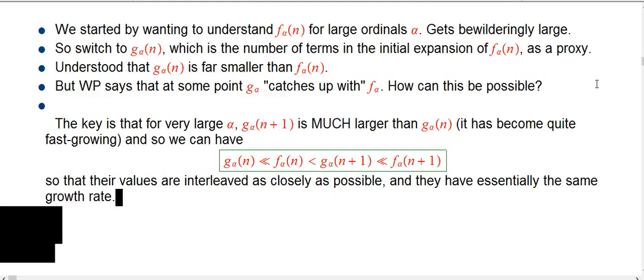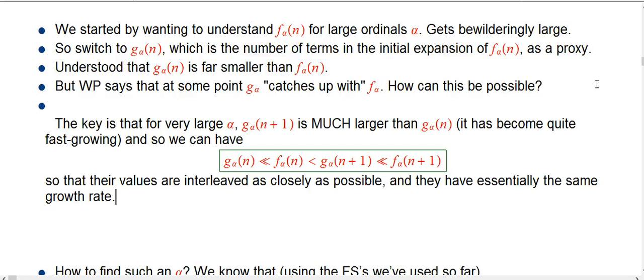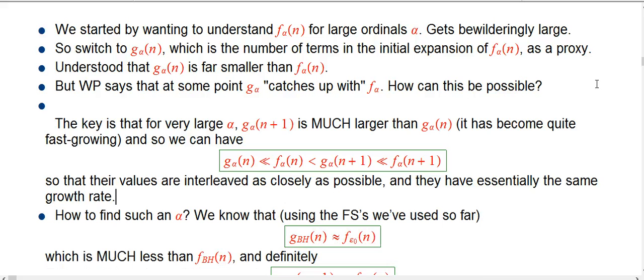But it's still not easy to see how this could ever happen, because as far as we've gone, g_α is nowhere near. So, well, what do we know? We know that if you look, the biggest ordinal we've actually looked at explicitly is the Bachman-Howard ordinal.